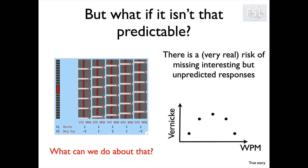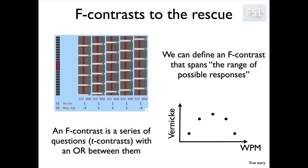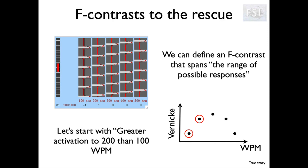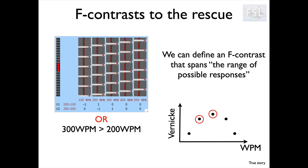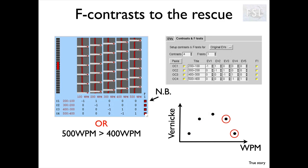We need better tools — something that can cope with a range of different shapes. F-contrasts are a great way to look at all different combinations, because they combine together different t-contrasts, asking whether we see something in this case or that case or both. What we'll do is take adjacent pairs and create a t-contrast across each pair: first and second presentation rates, second and third, third and fourth, and fourth and fifth — then combine all four into an F-contrast.